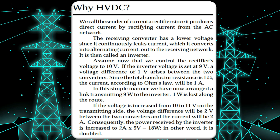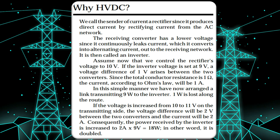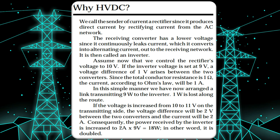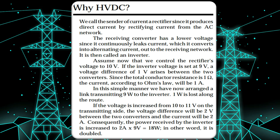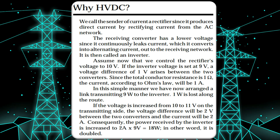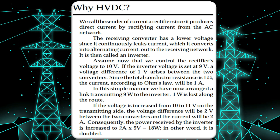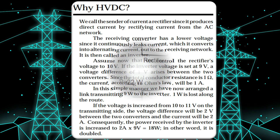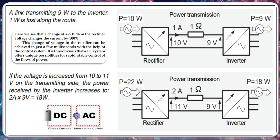Regarding potential health effects and biological effects: direct health effects of static fields are only known to occur at very high magnetic field strengths. For this reason, no adverse health effects are expected from the low magnetic field strengths in the vicinity of HVDC lines or converters.